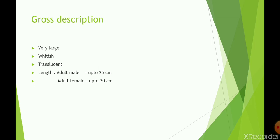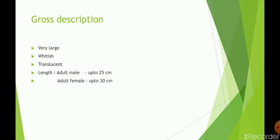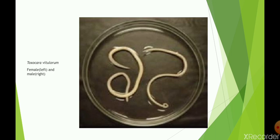Coming to gross description, it is a very large, whitish, and translucent worm, as you can see. The adult male is comparatively smaller, up to 25 cm, and the adult female is up to 30 cm — relatively longer than the male. On the left side you can see the adult female and on the right side the adult male. The male is comparatively smaller and also thinner.